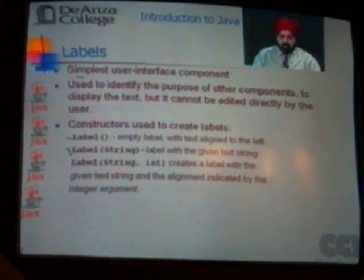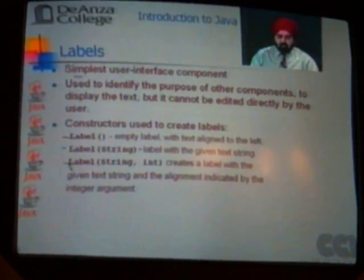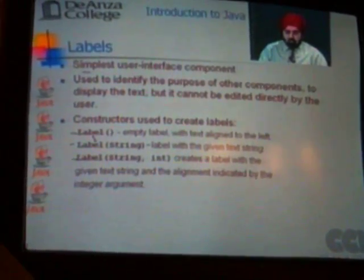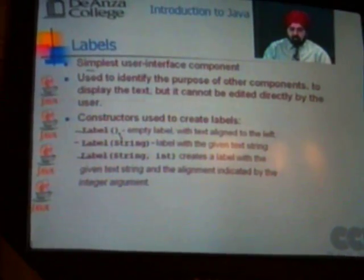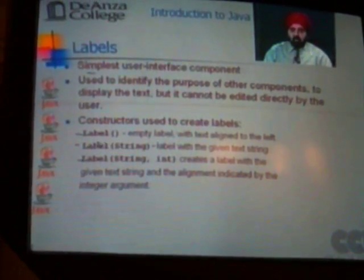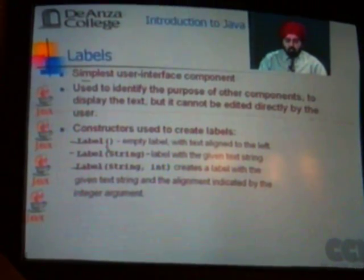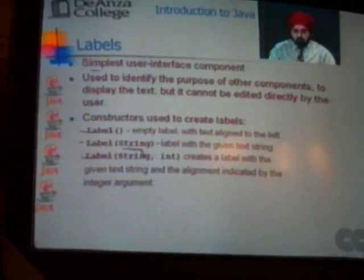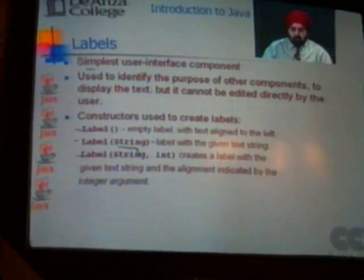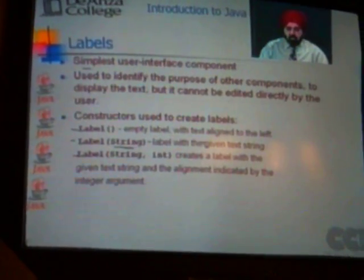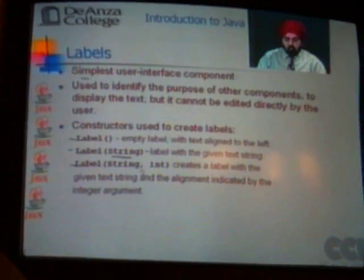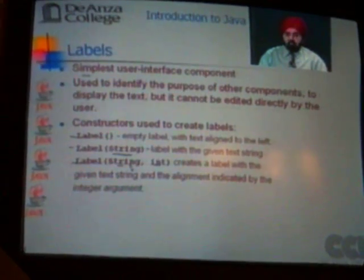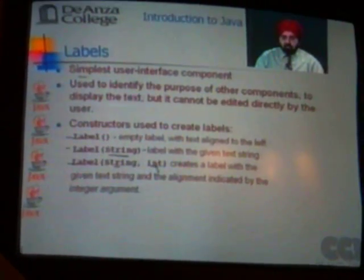You have three constructors for this component. You can create a label with text left aligned but it will basically show no caption. You can also give a string argument, and the string argument will then become the caption of that label. You can also specify a string with an integer value — the string is the caption, and the integer value refers to the alignment.